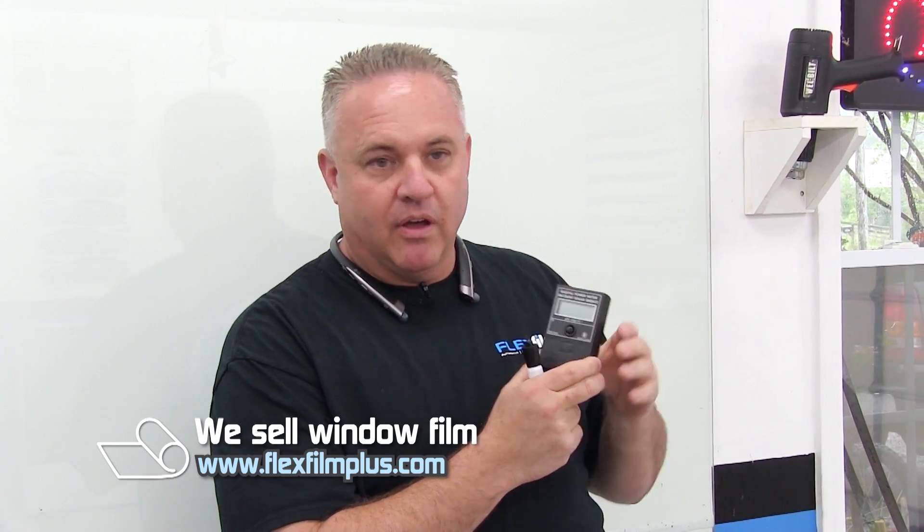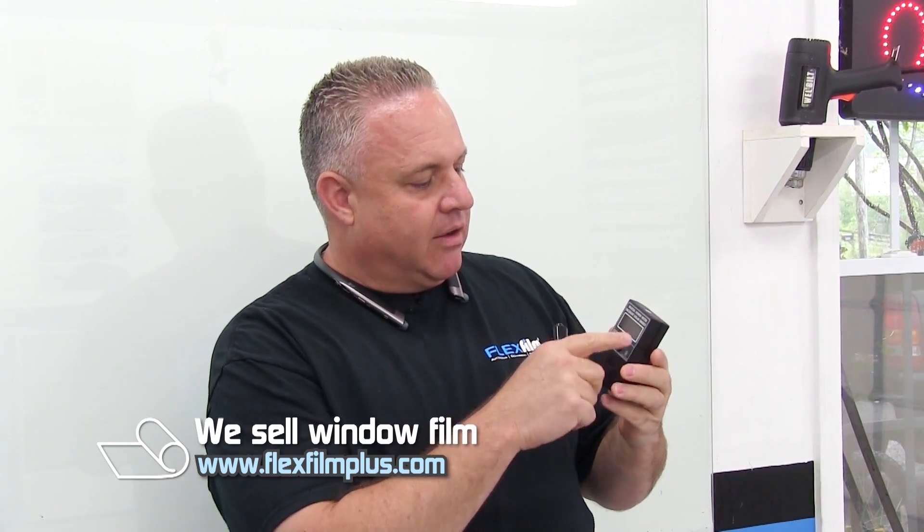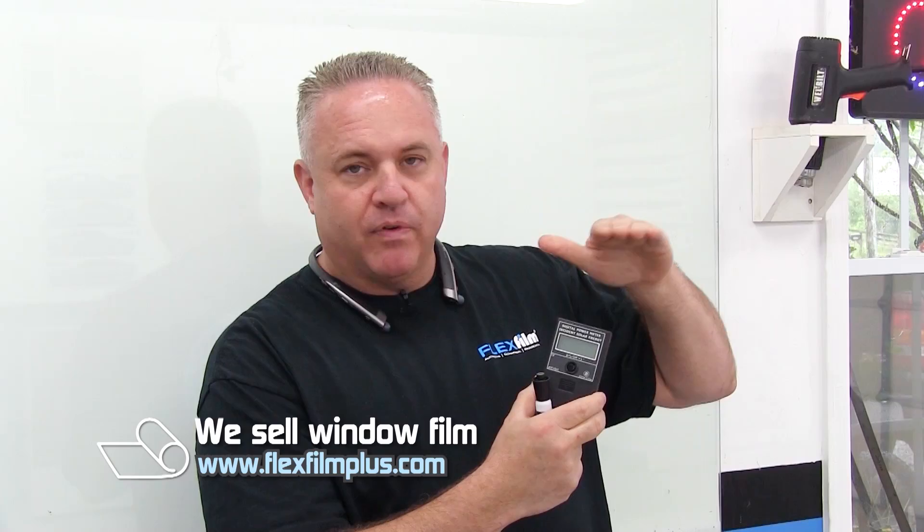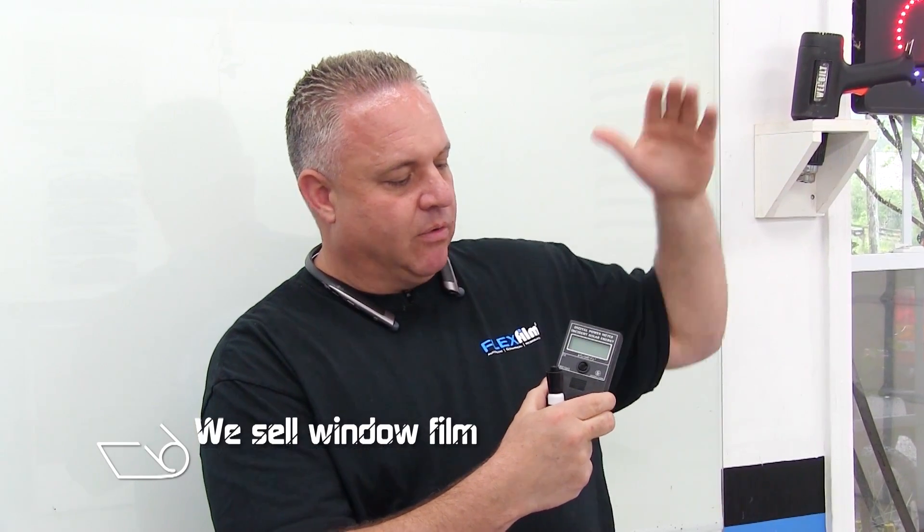If we take this meter and we hold it toward the sun, it's going to give us a reading on how many BTUs are present from the sun or any heat source. And if we put a piece of film in front of this, in between our heat source and the meter, this number should go down based on the performance that our film should have. A dyed film probably wouldn't do as well as some of our IR films or carbon films or metallized films.